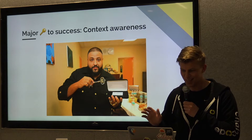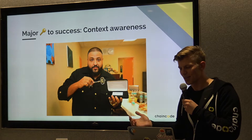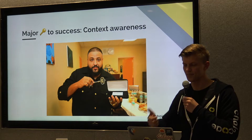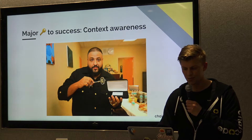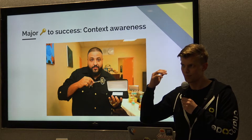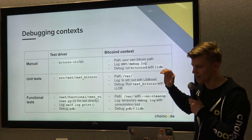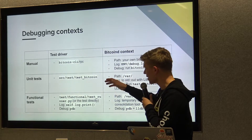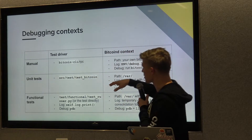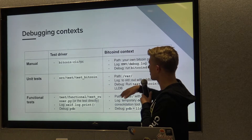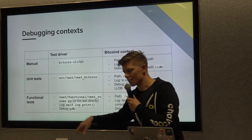The main message of this talk is context awareness. When starting out, there are several contexts: unit tests, functional tests, and running bitcoind yourself. You want to log from tests, from bitcoind, from C++ code, and from Python code. You just need a mental map of where you are and where to look to get the output you need. There's a reference document covering the different dimensions: test driver, bitcoind context, manual CLI usage, unit tests, functional tests, and so on.